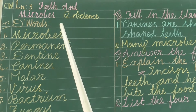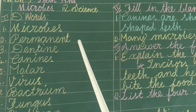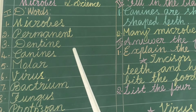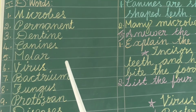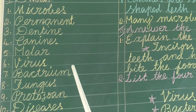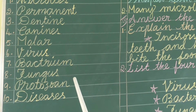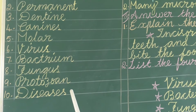Ostroман, D-words: microbes, permanent, dendrin, canines, molar, virus, bacterium, fungus, protozole and diseases.